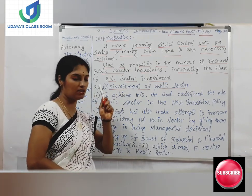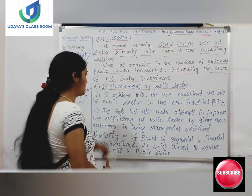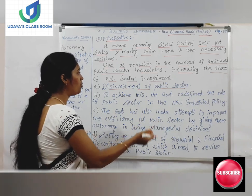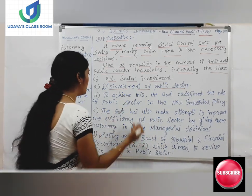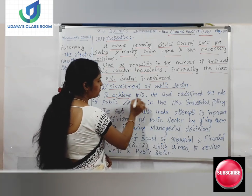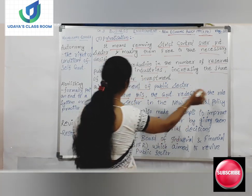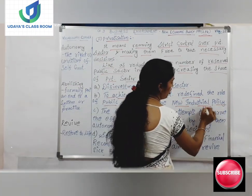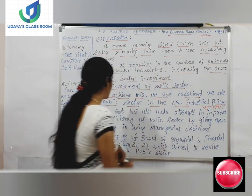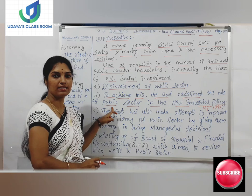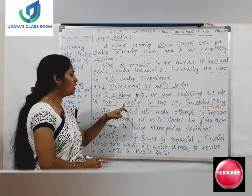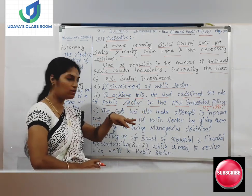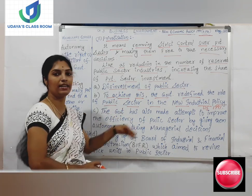In simple terms, disinvestment means selling of assets. The public sector will be selling its assets or dilating its shares in order to give opportunity to the private sectors. To achieve this, the government redefined the role of the public sector in the new industrial policy of 1991. Earlier after independence, the public sector had the majority power in the country, but in the industrial policy of 1991, the role of the public sector was redefined differently.